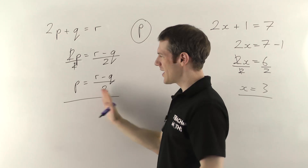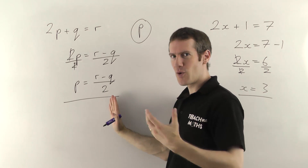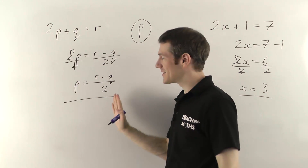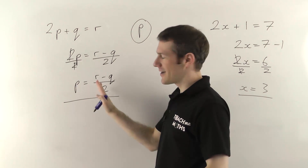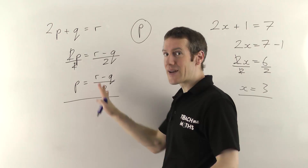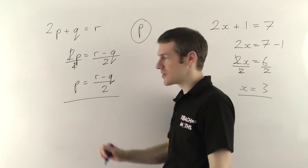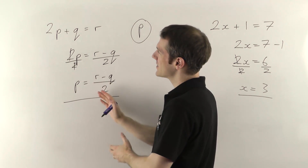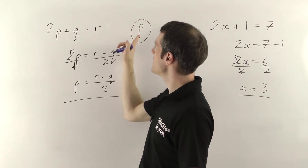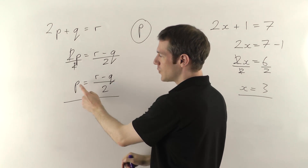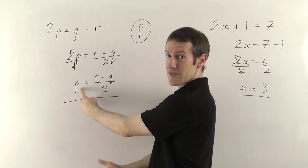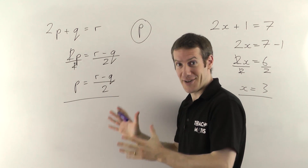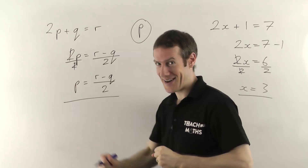That's our transposed equation. If you're wondering why we bother doing this, go and watch the transposition intro video — it explains why it's so useful in practice. We started with 2p plus q equals r; we've now got p by itself. We've done it!